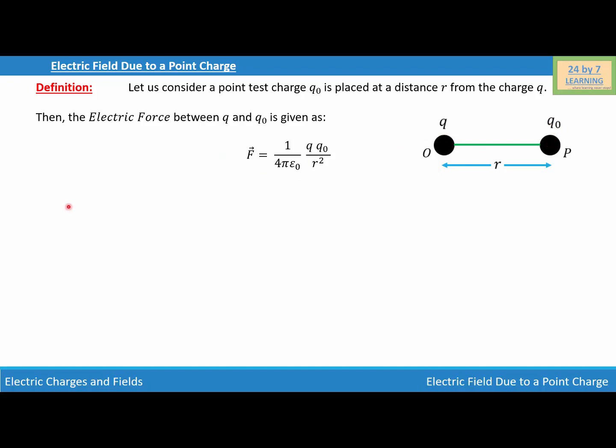Now let's find the electric field. The magnitude of the electric field at point P is given as E = F/Q₀.